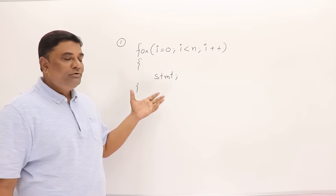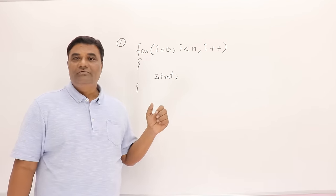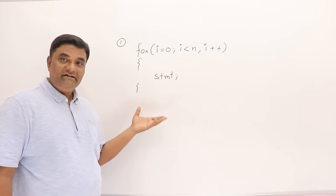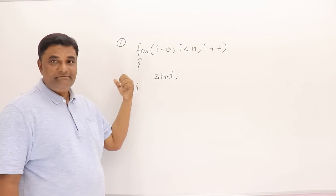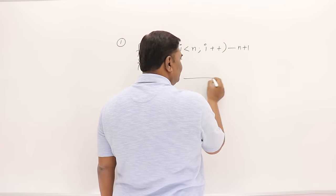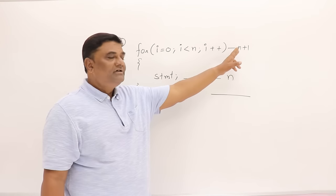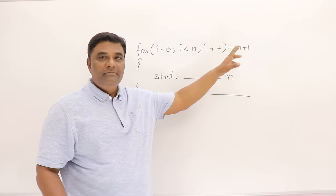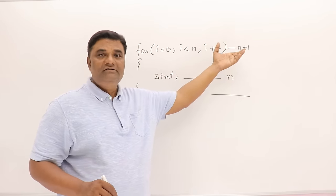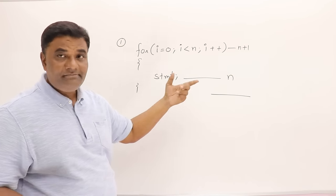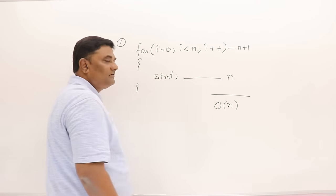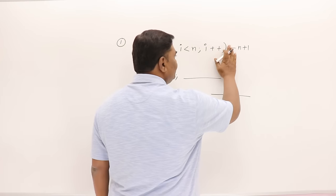Welcome back. I will take a few pieces of code and show you how to analyze them, how to find out the time complexity for them. This is a simple loop — I am not writing a complete algorithm, just a piece of code with one statement. We are already familiar with this one: the loop condition executes n+1 times and the statement executes n times. Since we write order-of as a degree, this is simply O(n).